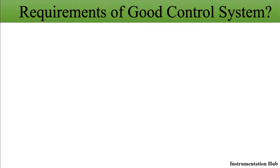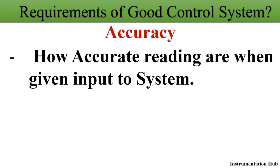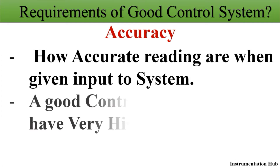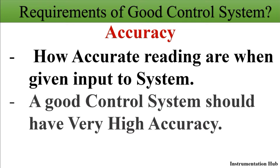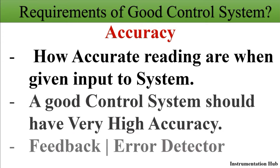Let's begin with the first point — accuracy. By the name, you can say it is the ability of the system to give an accurate output when an input is given. A good control system should have very high accuracy. Accuracy can be increased by using feedback, and you can also use an error detector to improve the accuracy of the system.